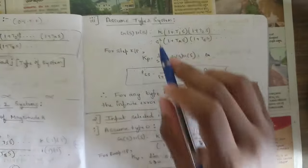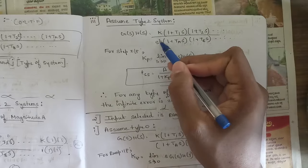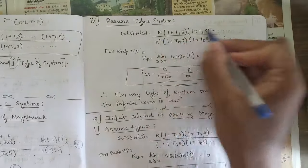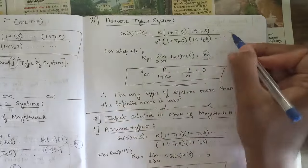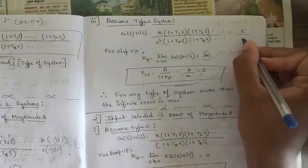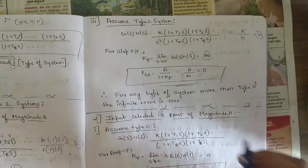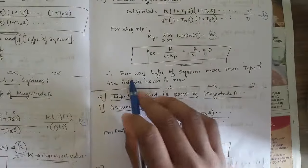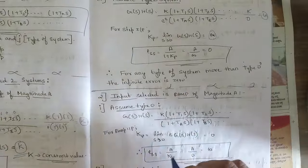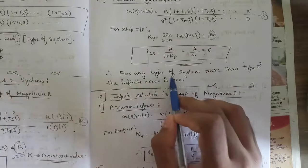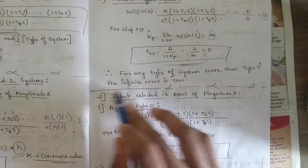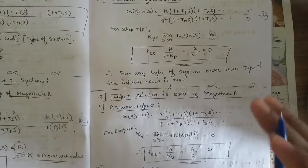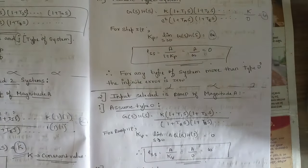Similarly for a Type 2 system with step input, j = 2, so the denominator has s squared. Applying the limit as s → 0 gives k/0 = infinity, so kp = infinity. The steady state error is again a/infinity = 0. Therefore, for any system of type greater than Type 0, when the input is a step, the steady state error is 0.